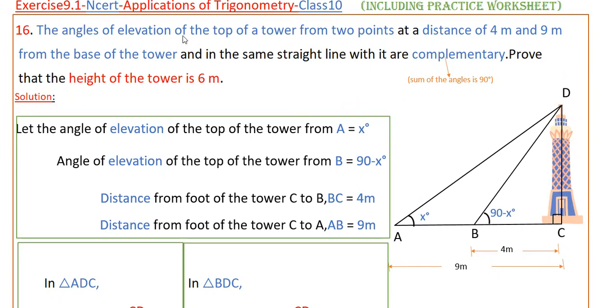The angles of elevation of the top of a tower from two points at a distance of 4 meters and 9 meters from the base of the tower and in the same straight line with it are complementary. Prove that the height of the tower is 6 meters.